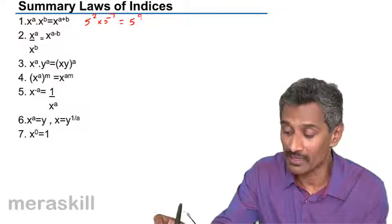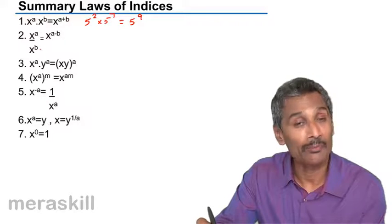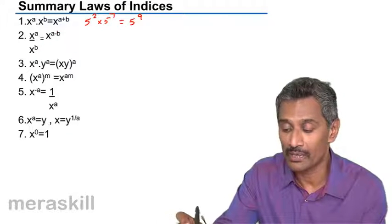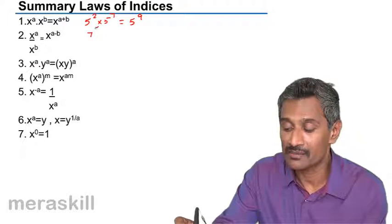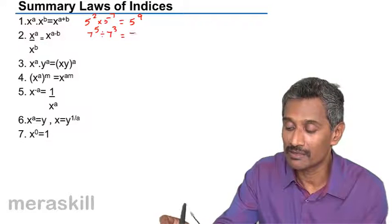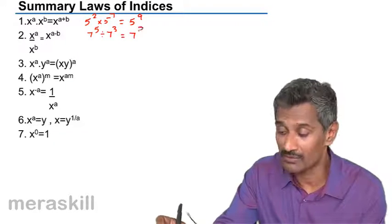x raised to a upon x raised to b is x raised to a minus b. Say seven raised to five divided by seven cube is nothing but seven raised to five minus three, which is seven squared.